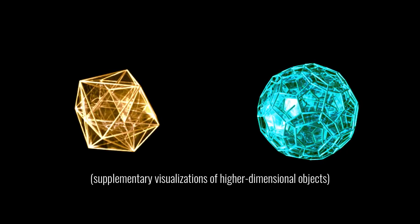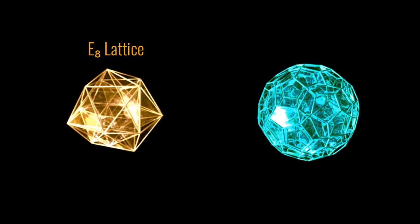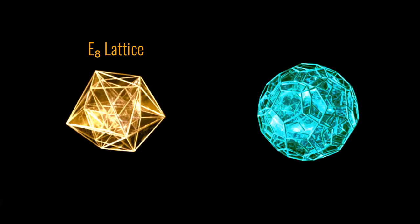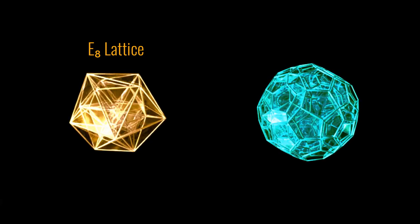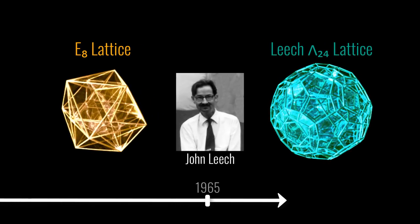In particular, in eight and 24 dimensions there are two very special lattices. In eight dimensions it's called E8 for complicated historical reasons, and in 24 dimensions it's called the Leach Lattice because it was discovered by John Leach in the early 1960s.